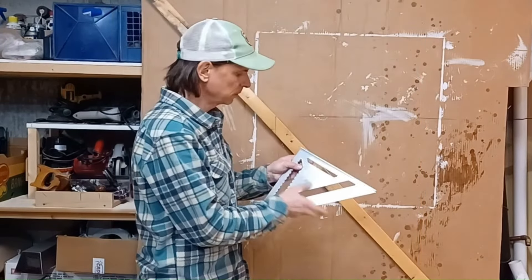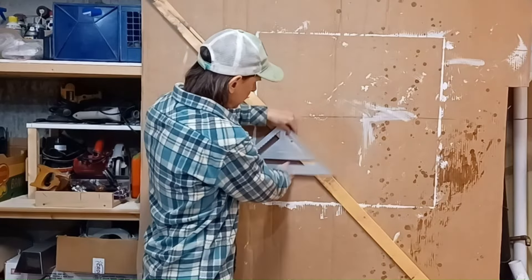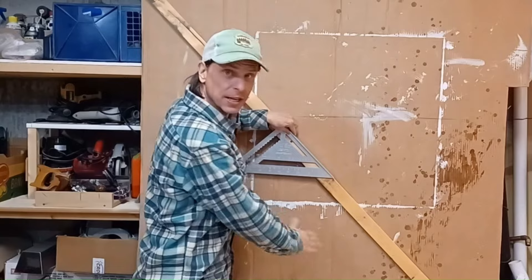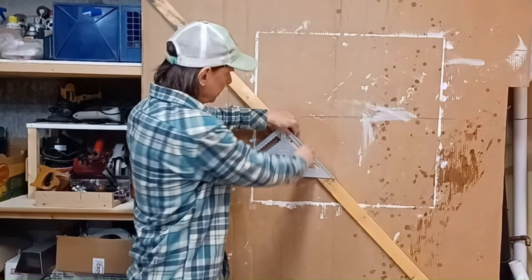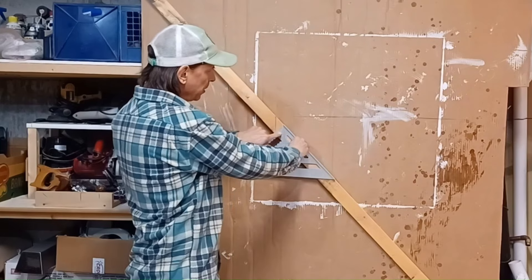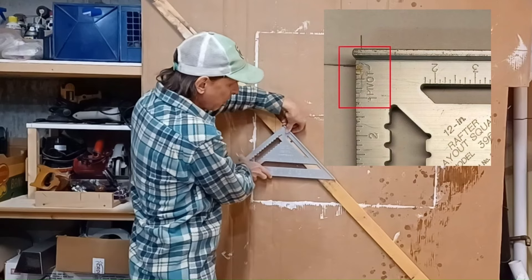Take your speed square. It's got a lip here. Place that lip on the board that you want to measure the angle that it's coming up from the ground at. There's a marking on here that says pivot. Make sure that corner stays on the board.